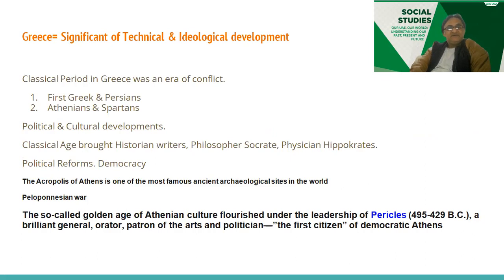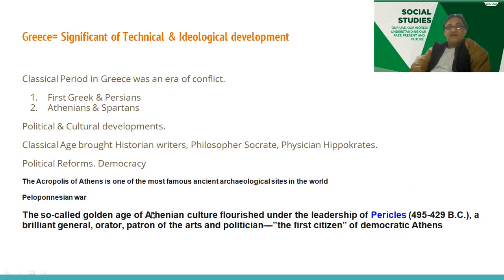Regarding the significance of developments in Greece: the classical period in Greece was an era of conflict — first the Greeks with the Persians, then the Athenians and Spartans. Political and cultural development in the classical age brought historians and writers — Socrates, Hippocrates the physician — and political reforms, specifically democracy. The concept of democracy originated in Greece. The Acropolis of Athens is one of the most famous ancient archaeological sites in the world. You must read about the Peloponnesian War and the so-called golden age of Athenian culture that flourished under the leadership of Pericles — a brilliant general, orator, patron of arts, and politician, the first citizen of democratic Athens.